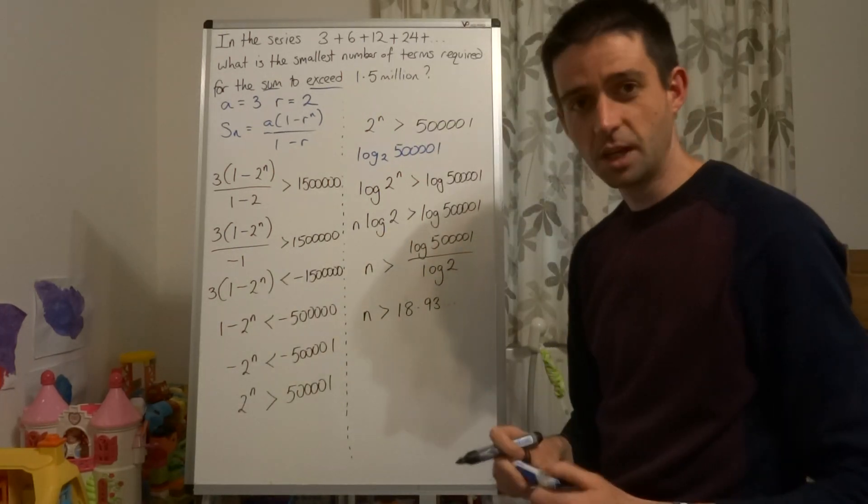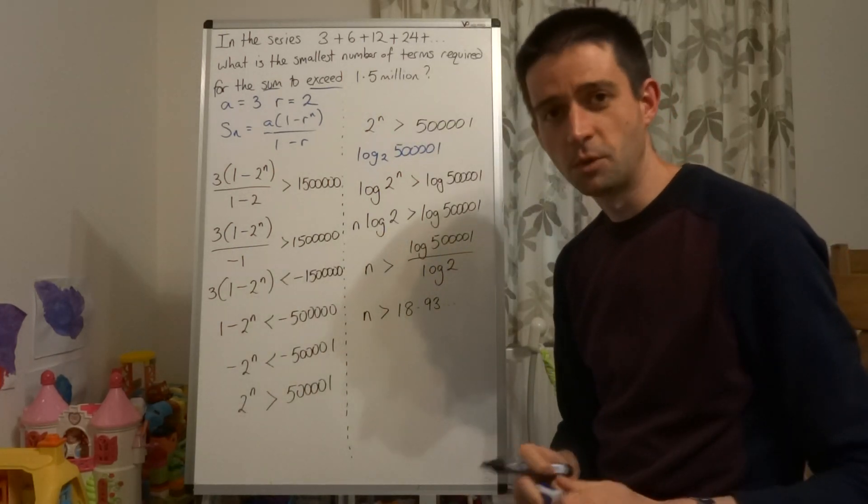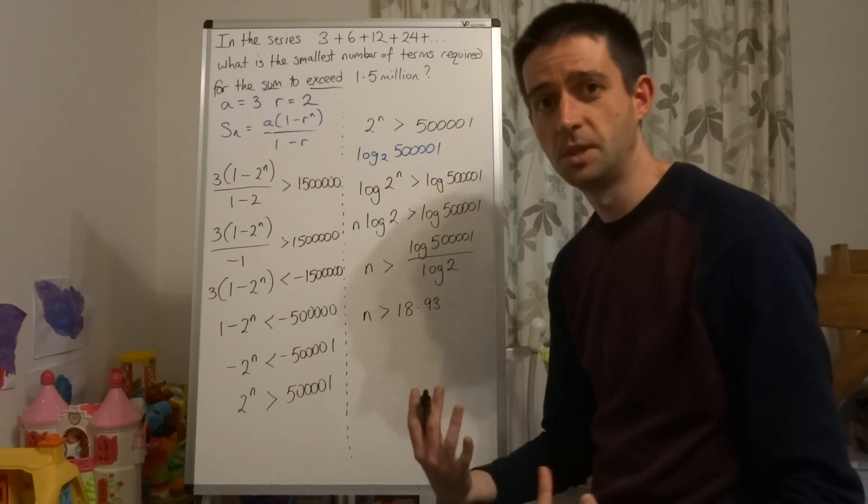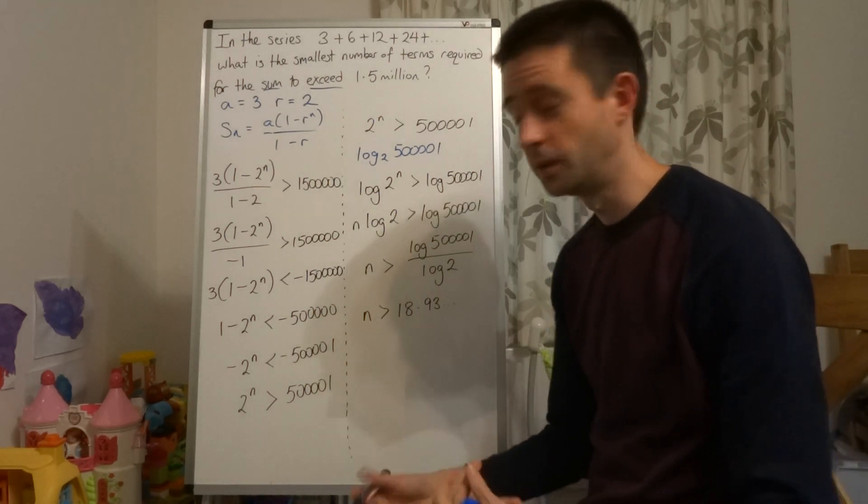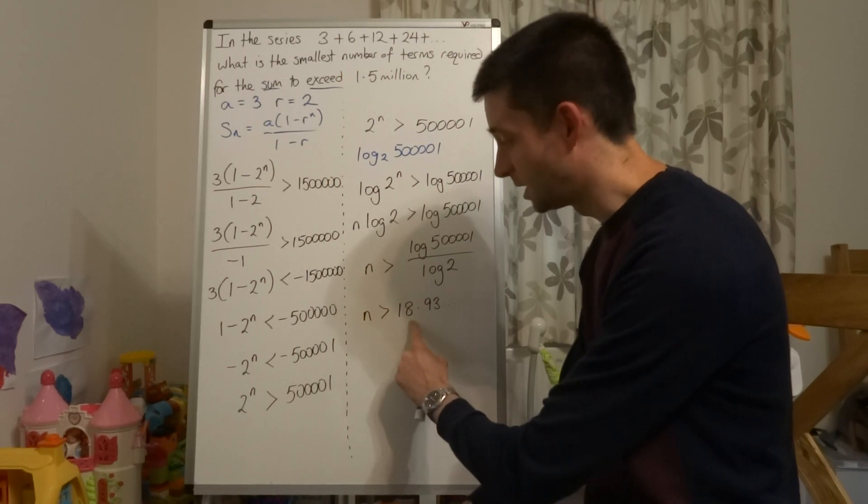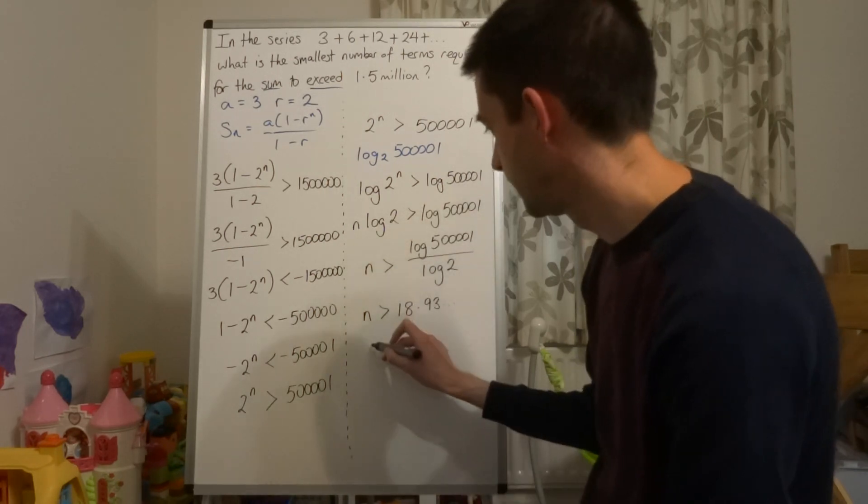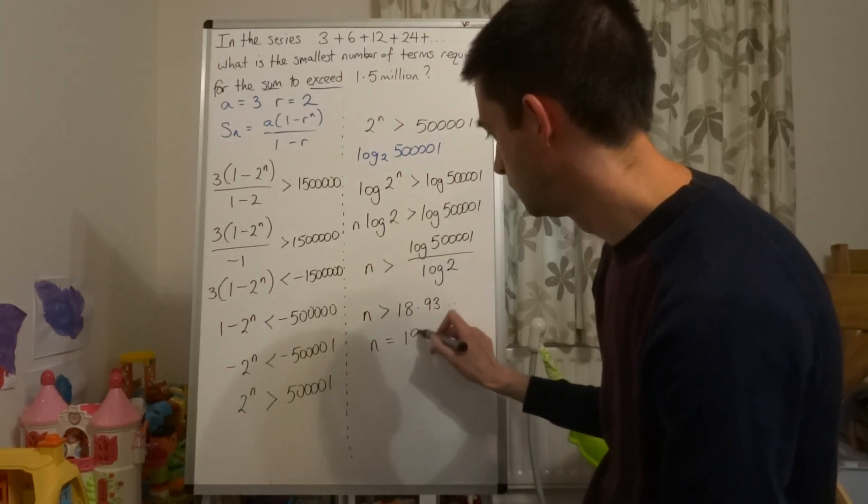So let's just think about what n represents. n represents the number of terms in a sequence. So that can only be an integer, a whole number. So if n is greater than 18.93, then n must equal 19.